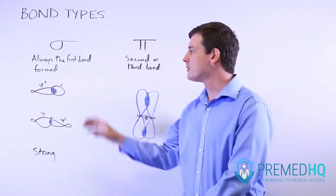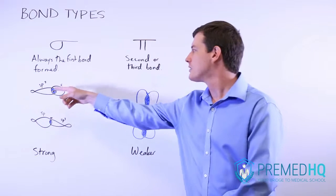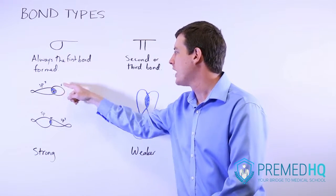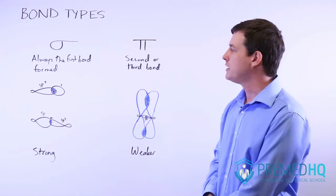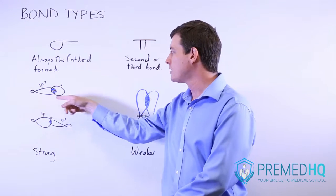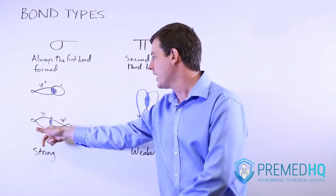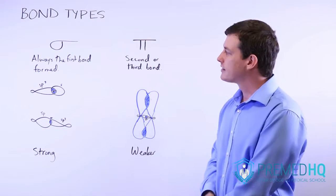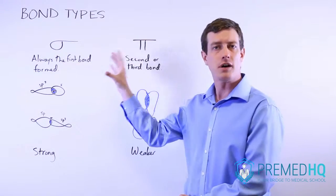The sigma bond is always the first bond formed and is created by the end of one orbital cloud overlapping with the end of another. It could be between an sp3 orbital and an s orbital, or between an sp orbital and an sp3. This will always be the first bond formed.